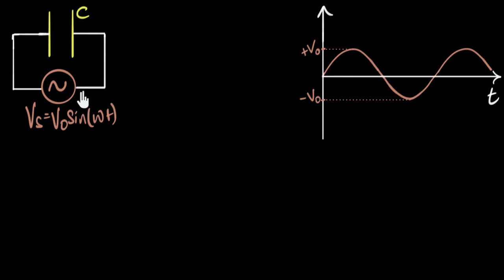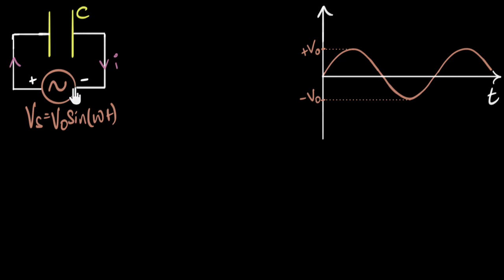I want an expression for current. Well, let's assume there's a current — at some moment in time, there is some current flowing this way. And let's say that the generator has, at that point in time, a positive voltage here and negative voltage here. It's continuously oscillating. Whenever we are dealing with such circuits, I think the way I like to think about it is in terms of voltage. Because there are no circuit elements in between, the potential at this point is the same as the potential at this point, and similarly for the other side. Therefore, at any moment in time, the voltage across the capacitor should equal the generator voltage.